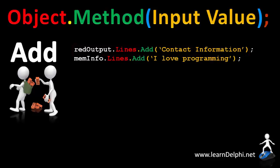A memo object also has a lines property and you also add the string to the lines property. This statement takes the phrase 'I love programming' and adds it to the lines property of a memo object named meminfo.